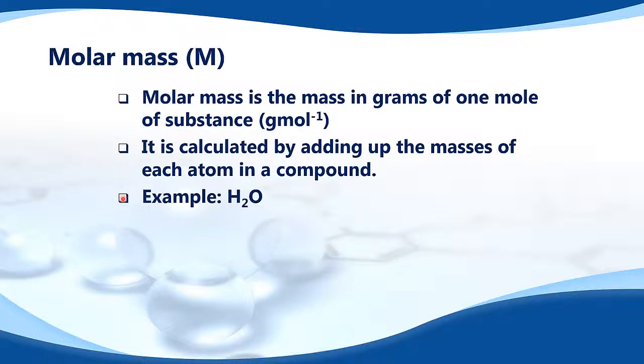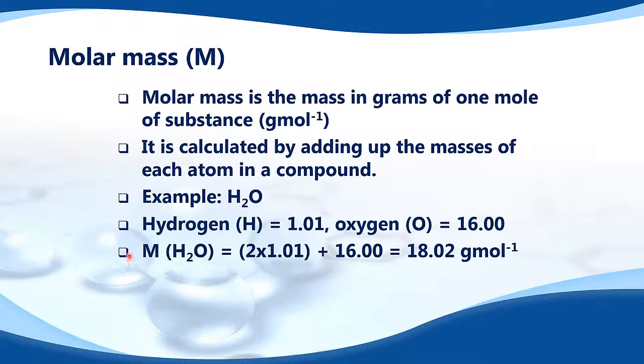Let's look at an example. This is H2O, water. It contains hydrogen and oxygen. Here are the relative atomic masses here, 1.01 and 16.00. So we add up the masses of all the atoms in the water molecule. We end up with 18.02 grams per mole, and this is the molar mass of water.